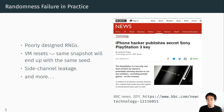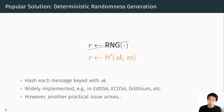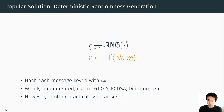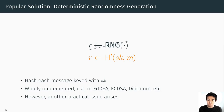Because of this, several researchers and practitioners have proposed a countermeasure called deterministic randomness generation. Instead of using a random number generator, you simply hash the signing key together with the message. This is nice because you don't have to rely on the quality of the random number generator — as long as you securely implement the hash function, the randomness follows the uniform distribution. This is already widely implemented in practice: EdDSA employs this deterministic randomness generation, as does a deterministic variant of ECDSA.